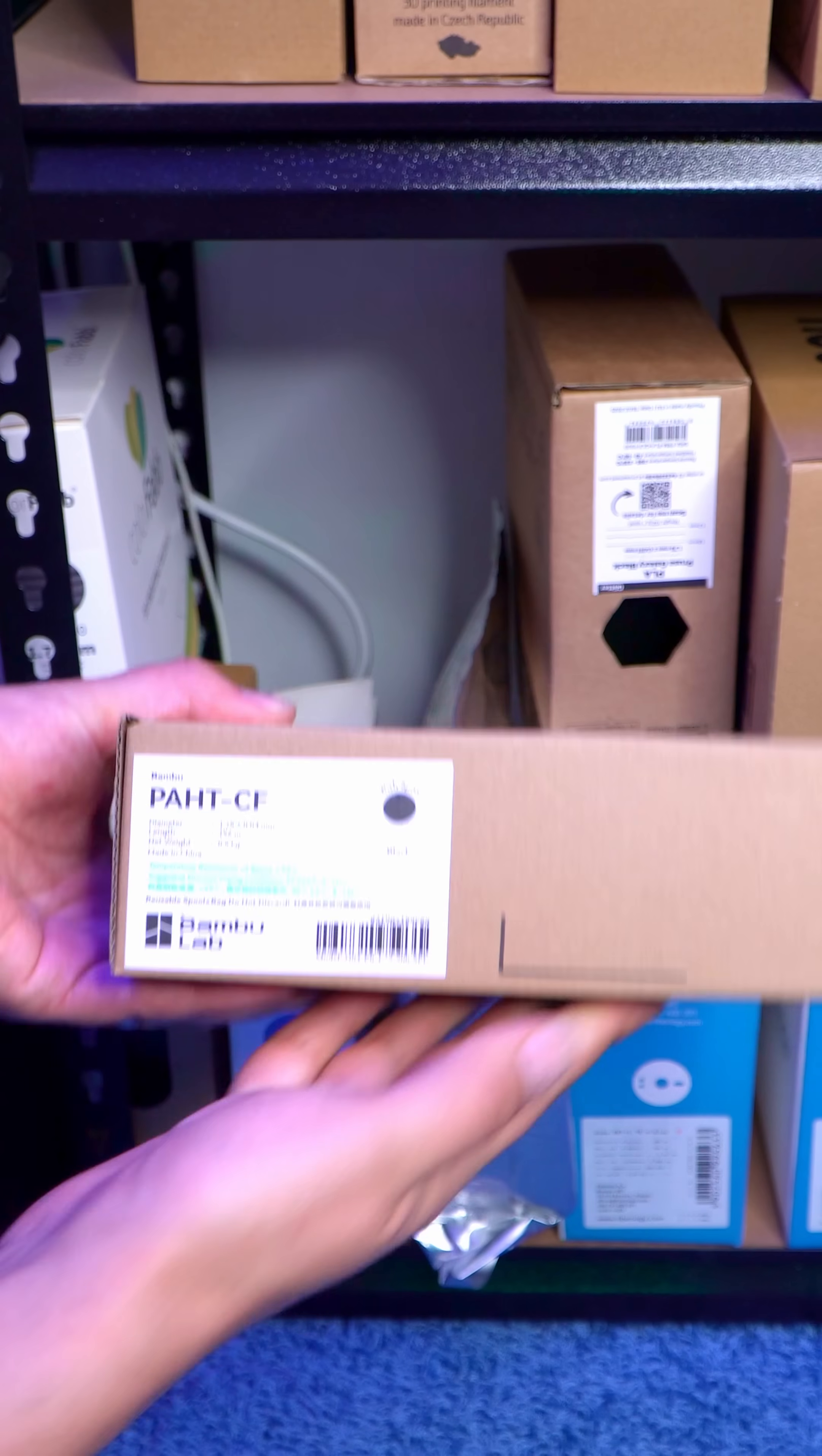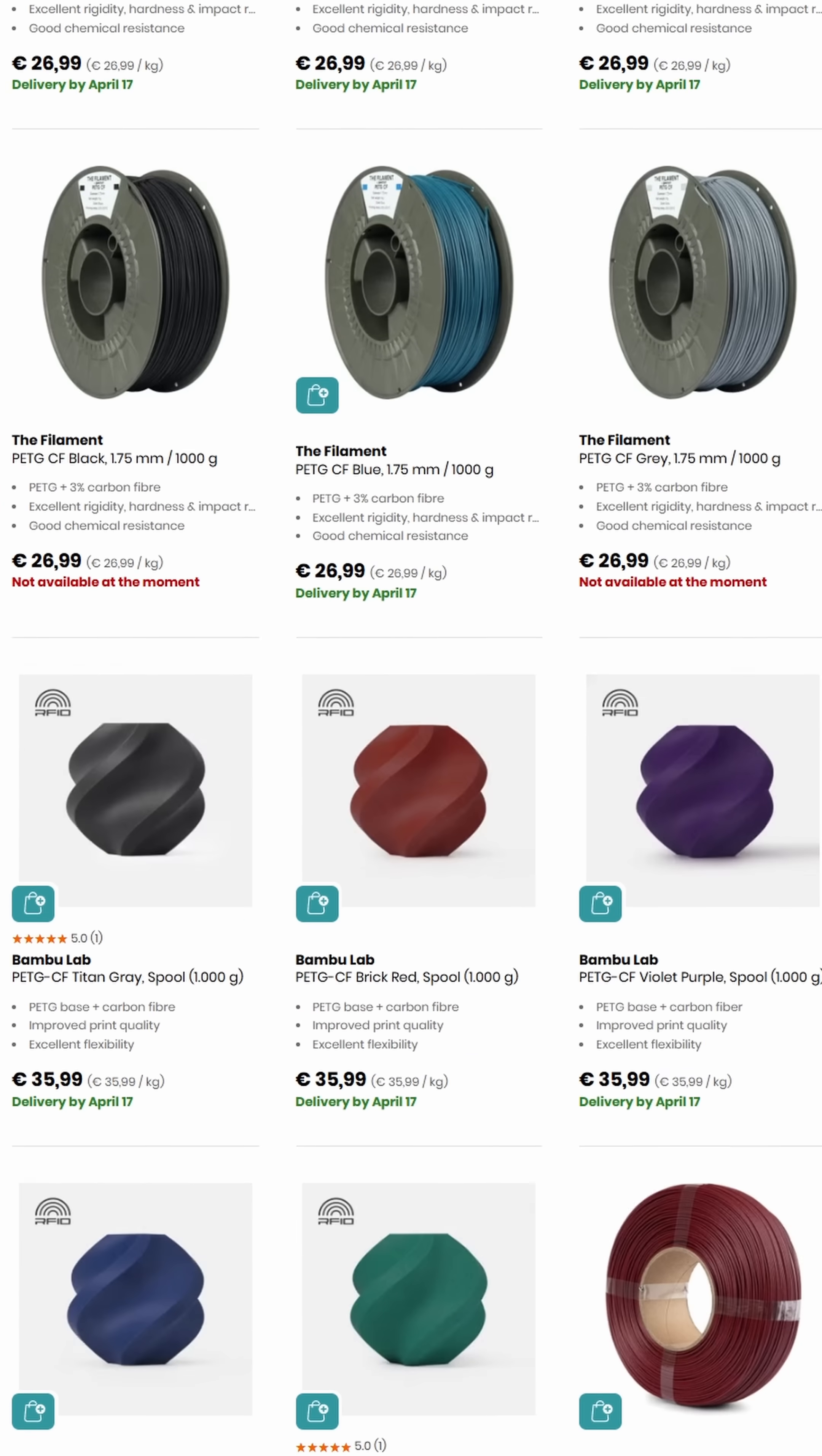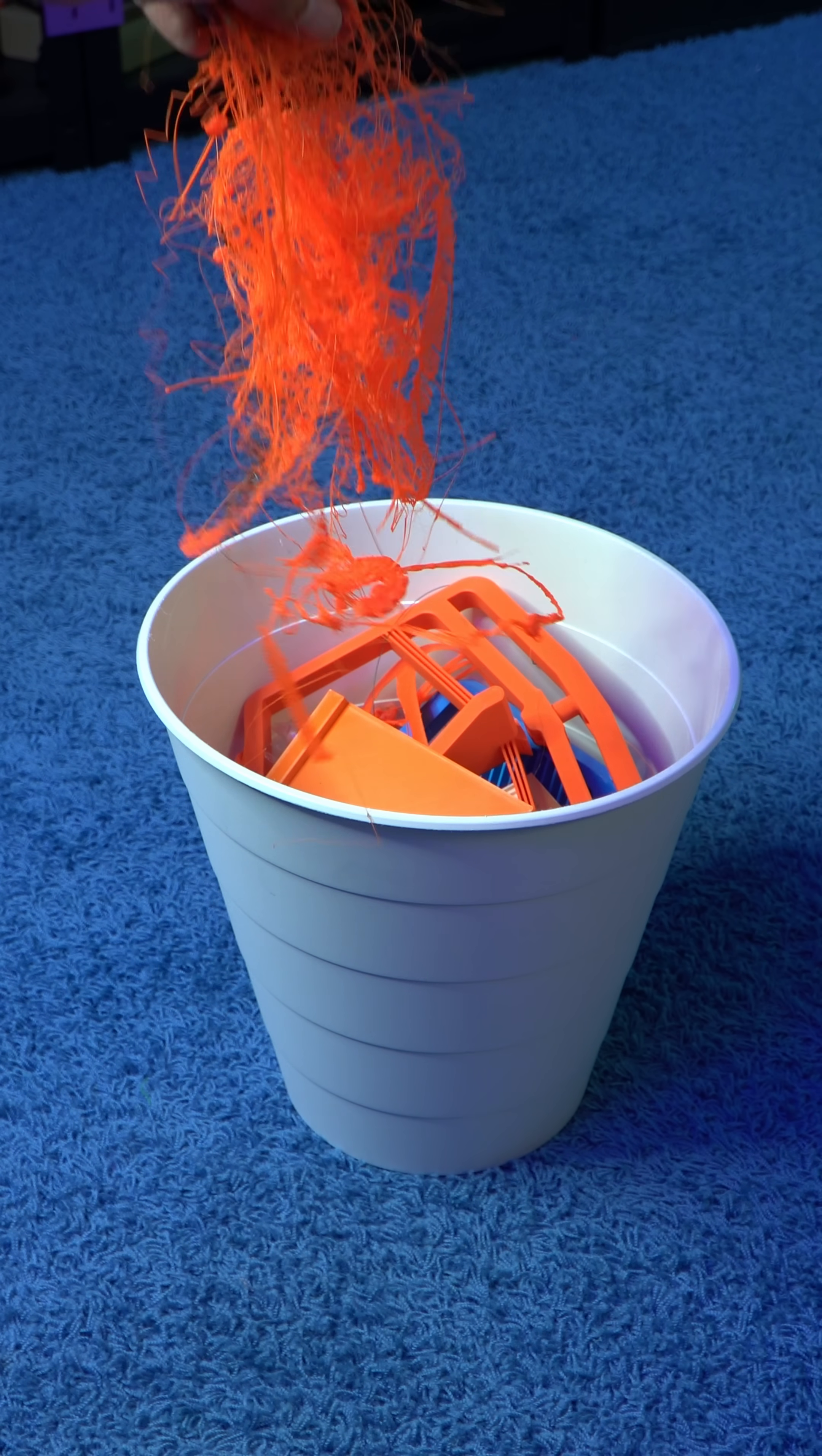Carbon fiber is more often combined with nylon or PETG. While PETG is pretty easy to print, it's not quite as easy as PLA, and nylon can sometimes be challenging.